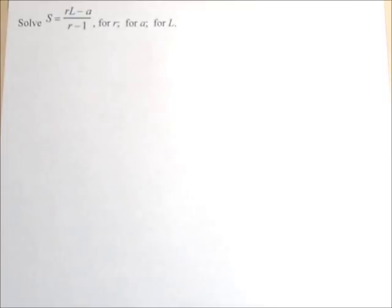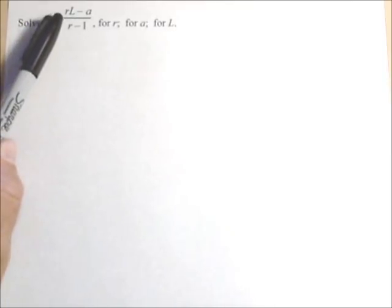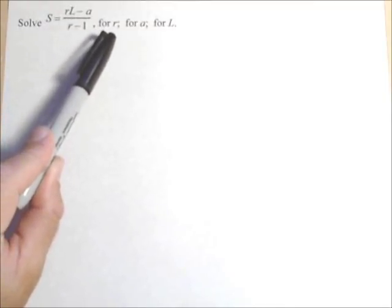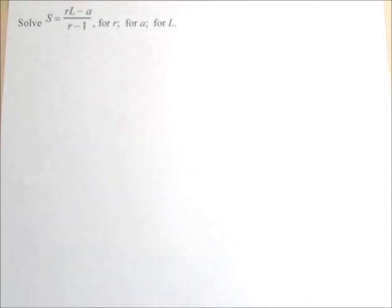In this video, we're gonna look at solving a literal equation, S equals RL minus A over R minus one, for three separate variables: one's for R, one's for A, and one's for L. So we'll do all these together. Let's do R first.